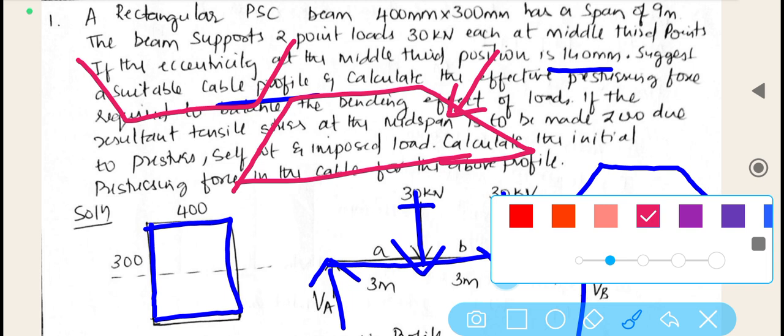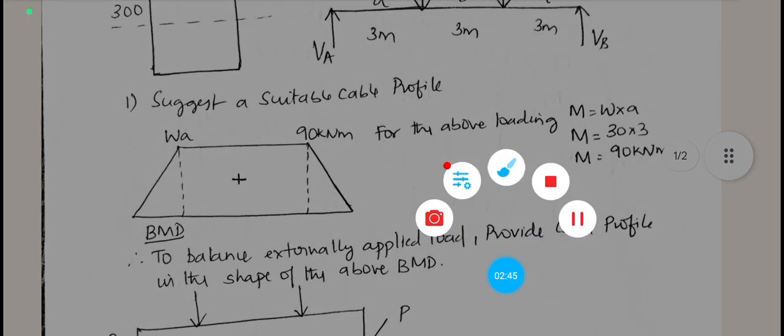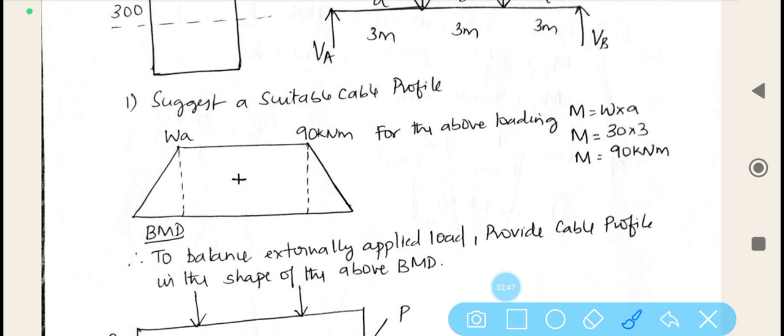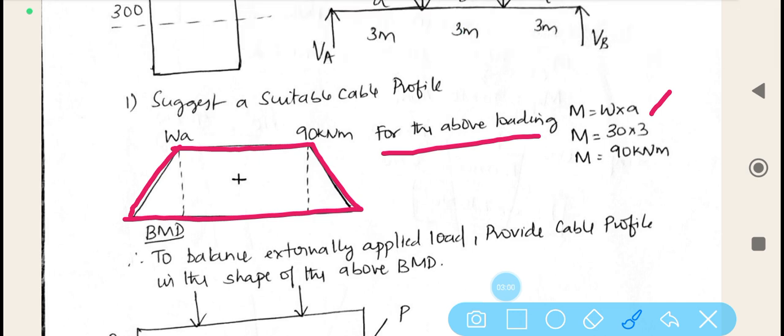Let us decide that we are going to suggest the cable profile which is having the shape of trapezoidal like this. This is how the understanding needs to be made. The bending moment profile has been plotted here. We need to find out what is the bending moment for the above loading. It is a simple and general calculation. M is equal to W into A. M equals 30 into 3. M is equal to 90 kilonewton meter.